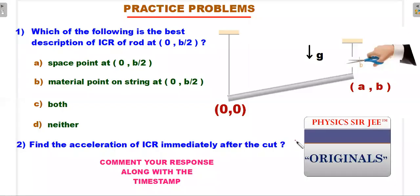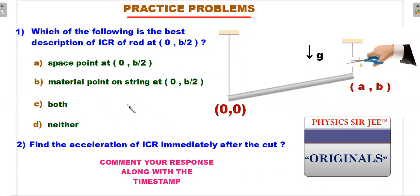Here are the practice problems. Two problems for the same situation — if you can answer these step by step, your understanding of ICR will improve greatly. The first: which of the following is the best description of the ICR of the rod? We found the ICR at (0, b/2). We drew perpendicular lines to the velocity vectors of point A and the center of mass and found that point. Now I want you to describe that point — this tests understanding rather than just memorizing the method.